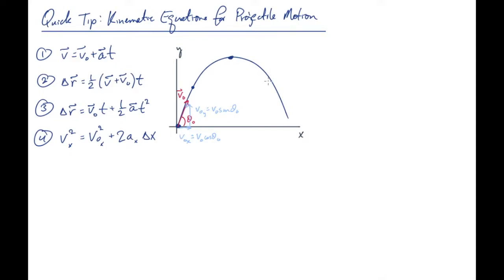It's important to remember for a projectile that there's no horizontal component of acceleration — ax equals zero. The y component of acceleration equals minus g, minus 9.80 meters per second squared. These are both constant, so we can use the kinematic equations substituting these values in.